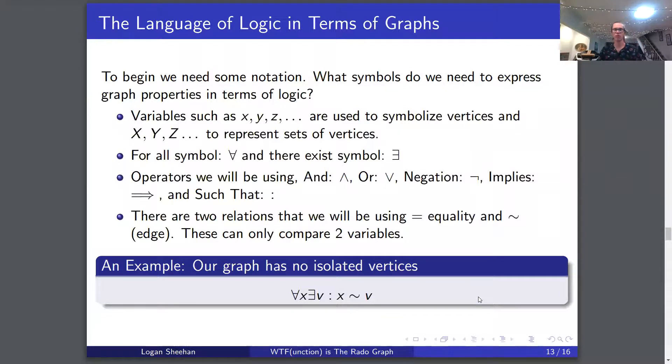An example: what if we wanted to say our graph has no isolated vertices? We would say for all x, there exists a v such that x has an edge with v. That says our graph has no isolated vertices.